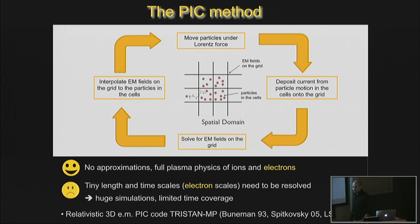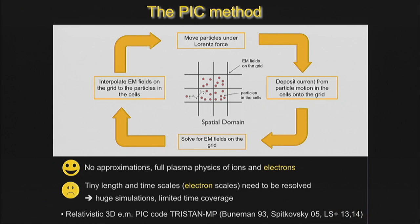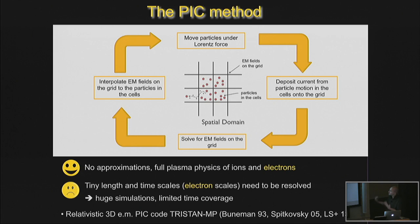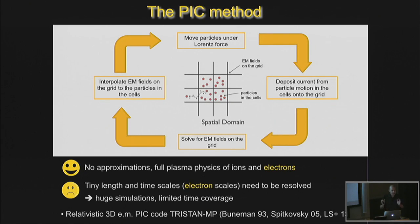To study what reconnection looks like, we use the particle-in-cell method, which is a full plasma physics method. Particles are treated as charged particles; they interact through electromagnetic fields, which they themselves produce — a loop that closes itself consistently. The disadvantage is that very large simulations are required because you need to resolve very small scales, which are often very different from the large macroscopic scales of astrophysical interest. Extrapolation is needed, and huge simulations are needed.